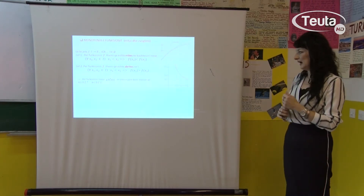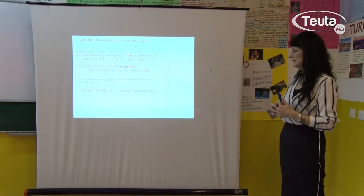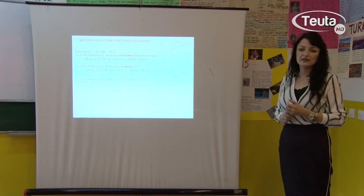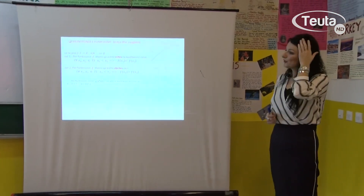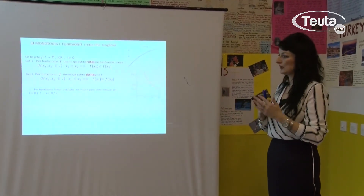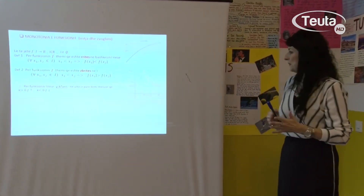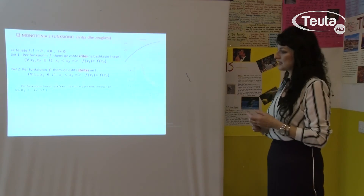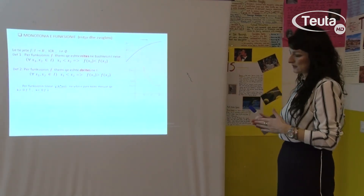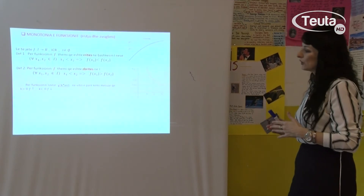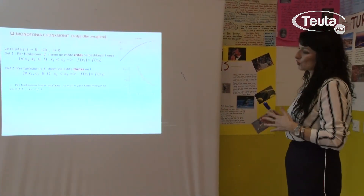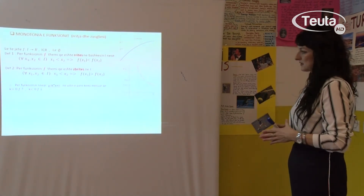Le të kemi funksionin linear, forma e përgjithshme e funksionit linear: y = kx + n. Ju kujtohet, në vitin e parë keni mësuar dhe për të vlen që koeficienti i drejtimit është ai që na tregon nëse funksioni është rritës apo zbritës. Atëherë të përsërisim: kur k > 0, atëherë kemi thënë që funksioni është rritës. Kurse, në rastin kur koeficienti i drejtimit është k < 0, atëherë funksioni jonë është zbritës.